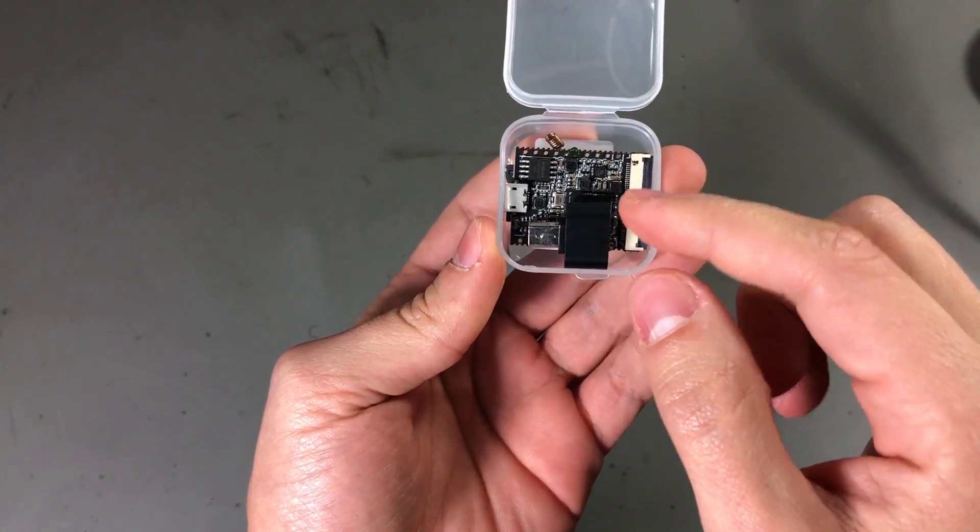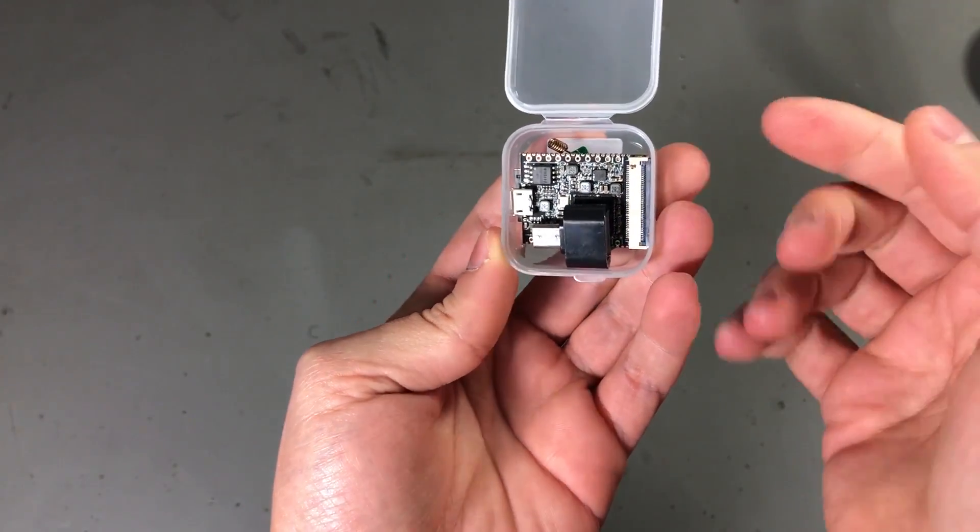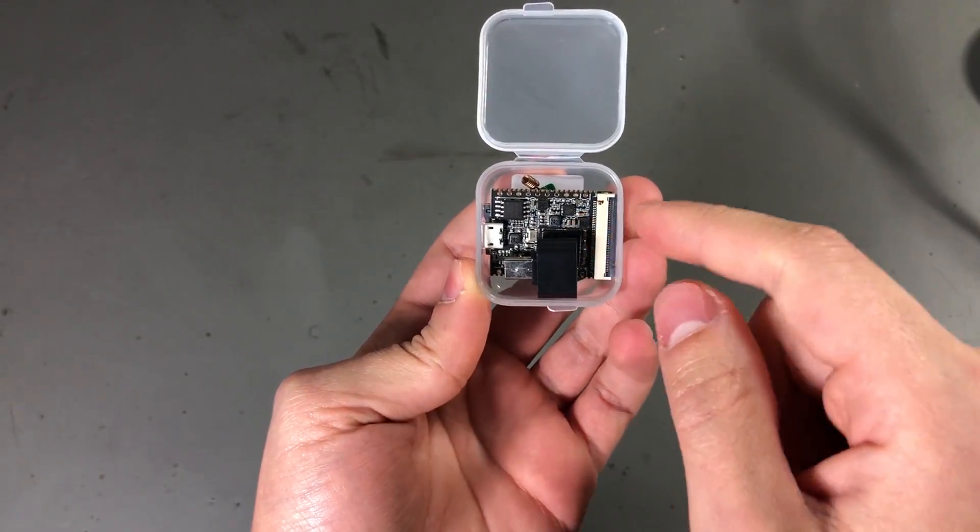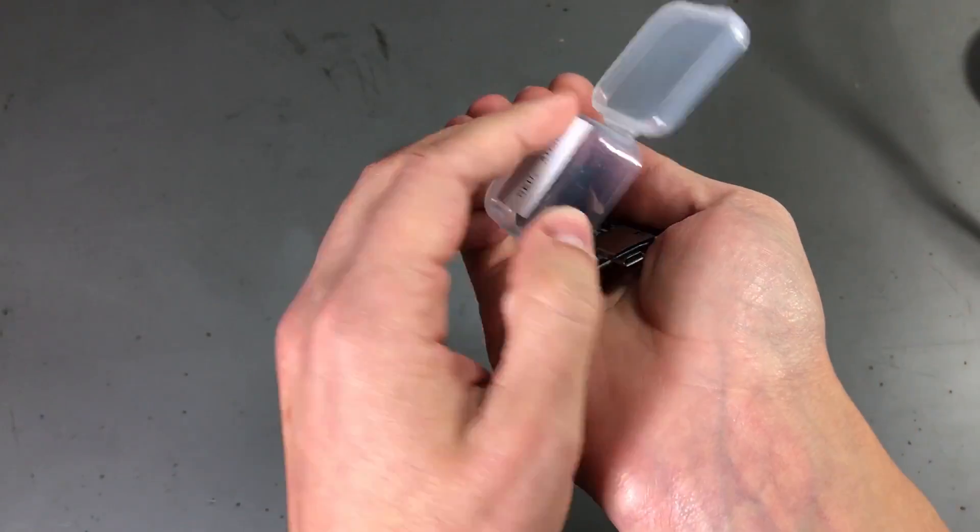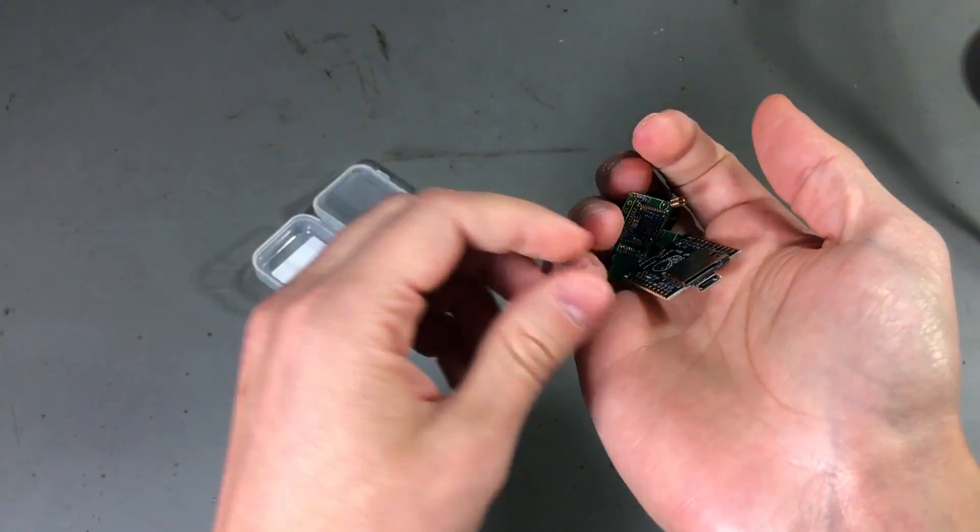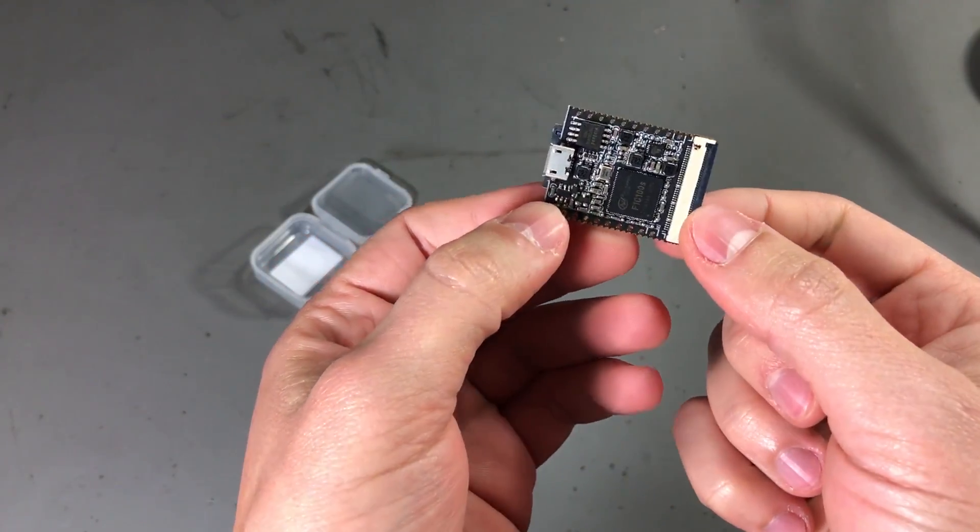Next up, a fairly interesting product. It's the Lichy Pi Nano. So as you can see, even the packaging is very small. But if we open this, we discover a very small Linux-capable board inside.